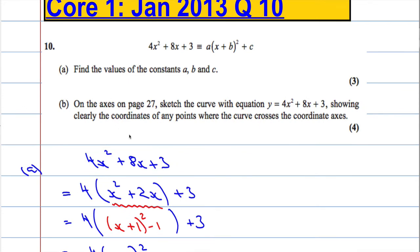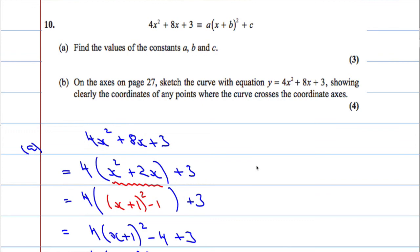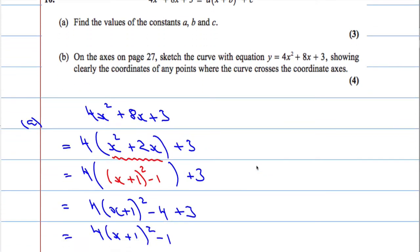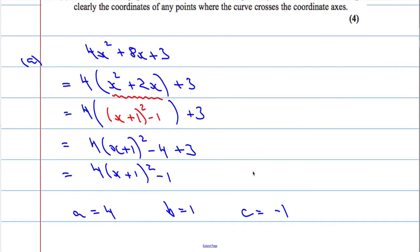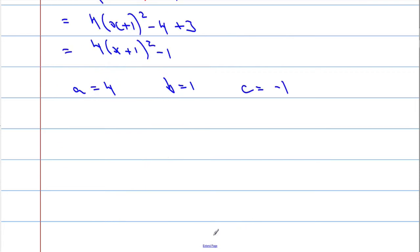OK, so on the axis, on page 27, sketch the curve with the equation y equals 4x squared plus 8x plus 3. So we're expected to sketch this curve, showing clearly the coordinates of any points where the curve crosses the coordinate axis. All right, now we don't have a page 27, so I'm going to draw my own axis.